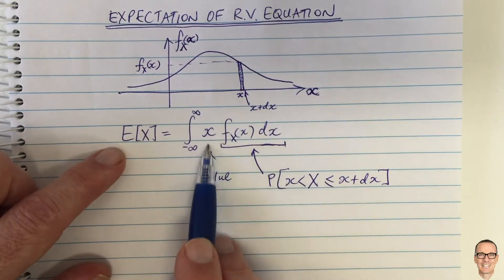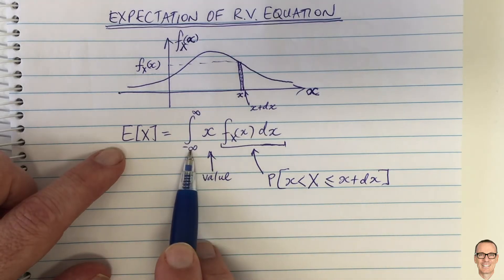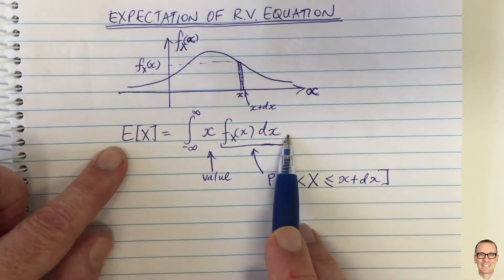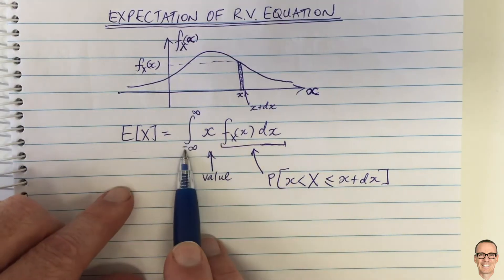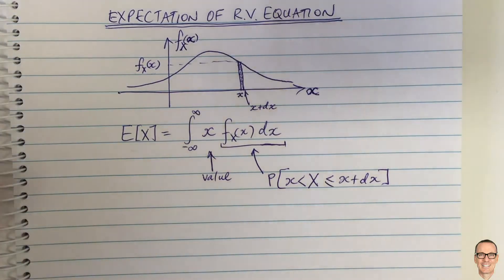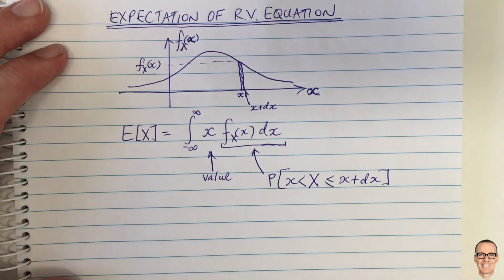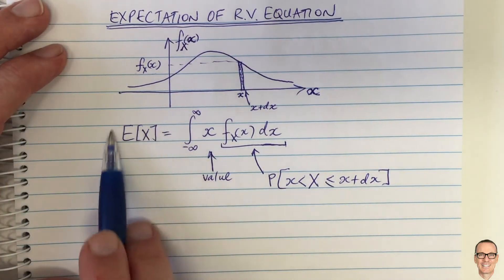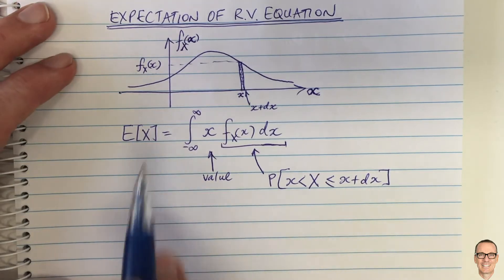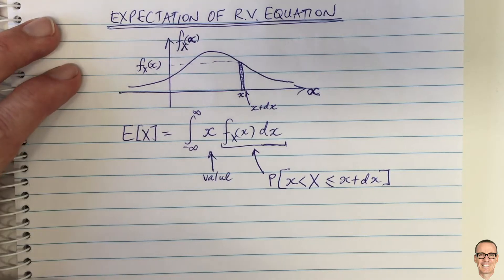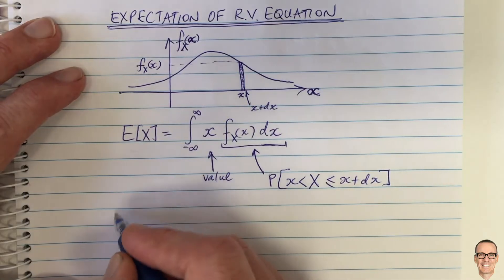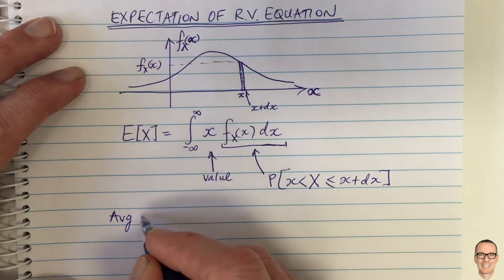The integral adds them all up — you do it for every single value and add them all up. So the expectation equation is the value times the probability of getting that value, added up over all values. How does this relate to the average? Often people use the word average for the expectation, and sometimes they are the same — that's if the system is ergodic, and lots of systems are ergodic.